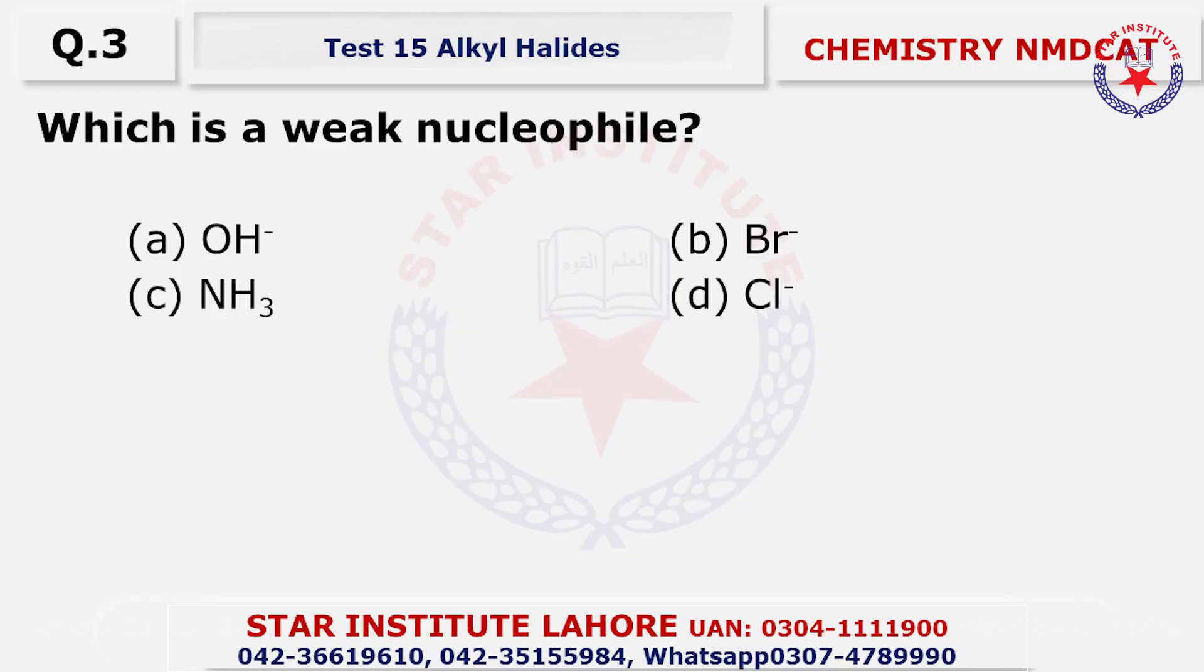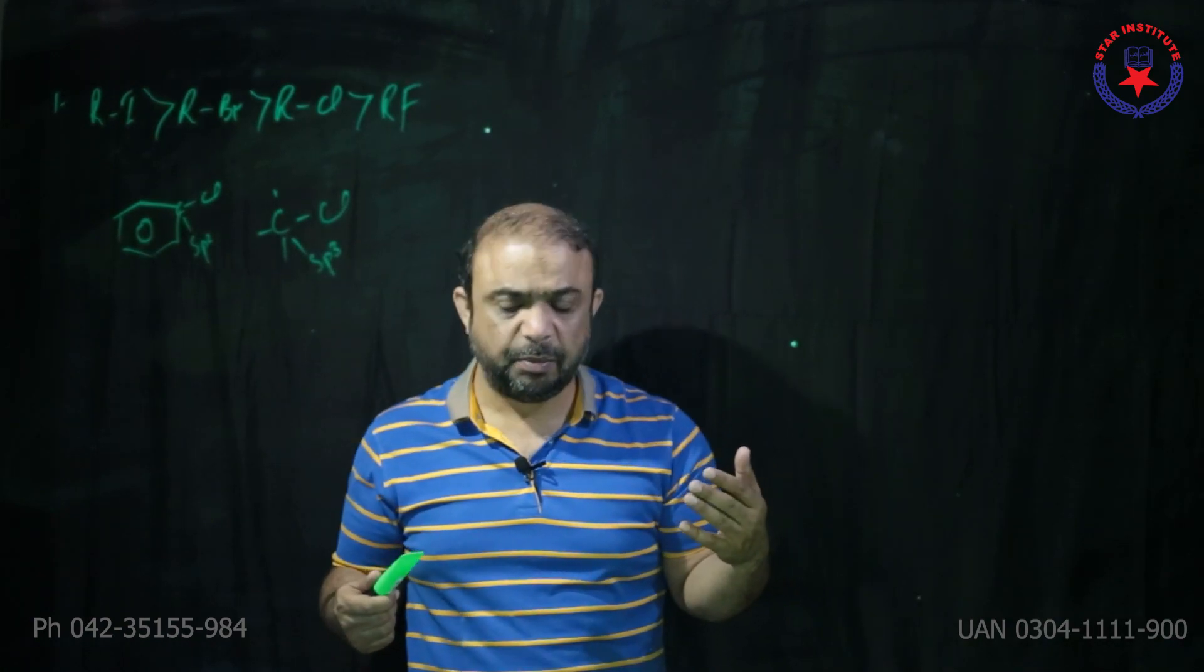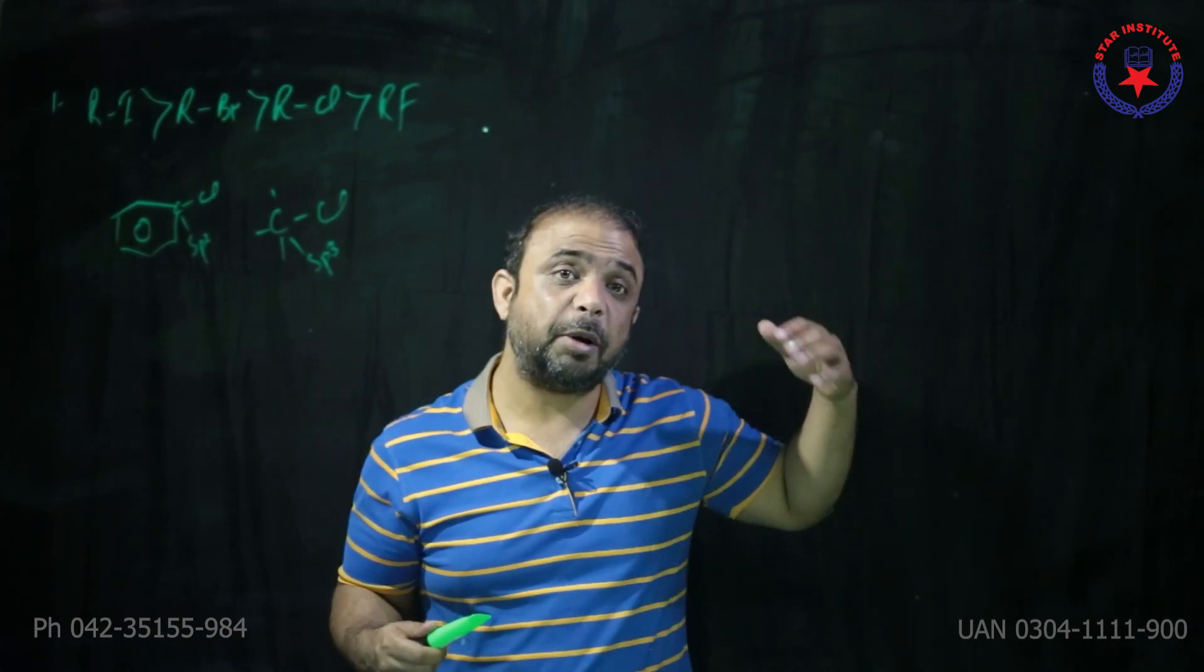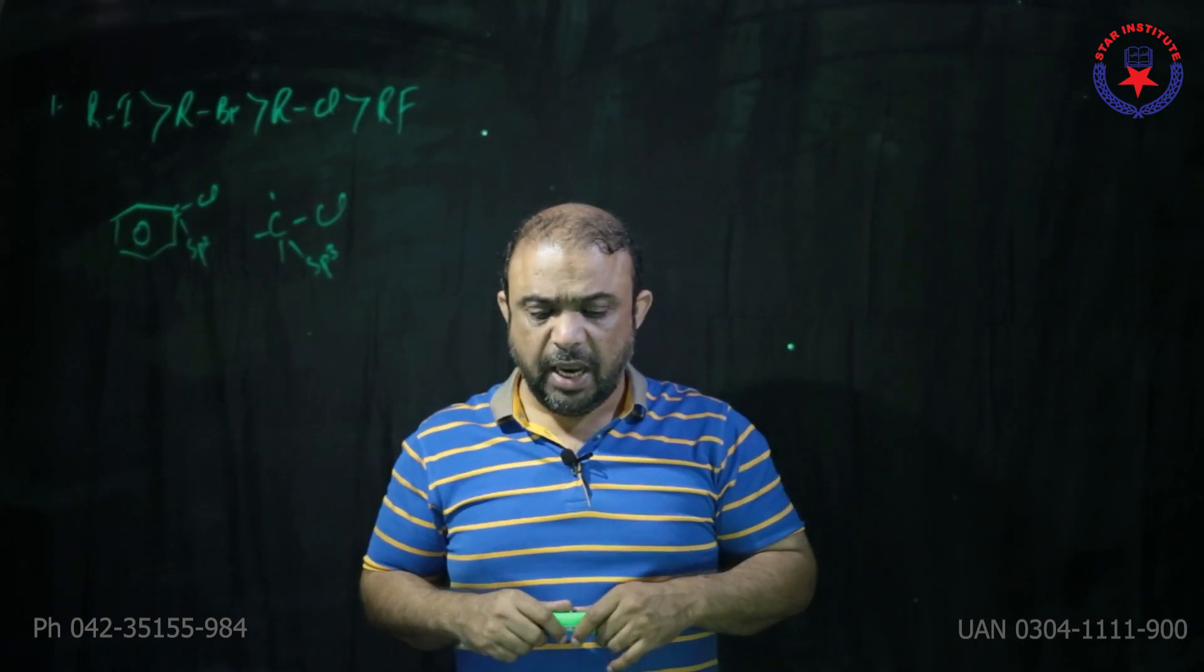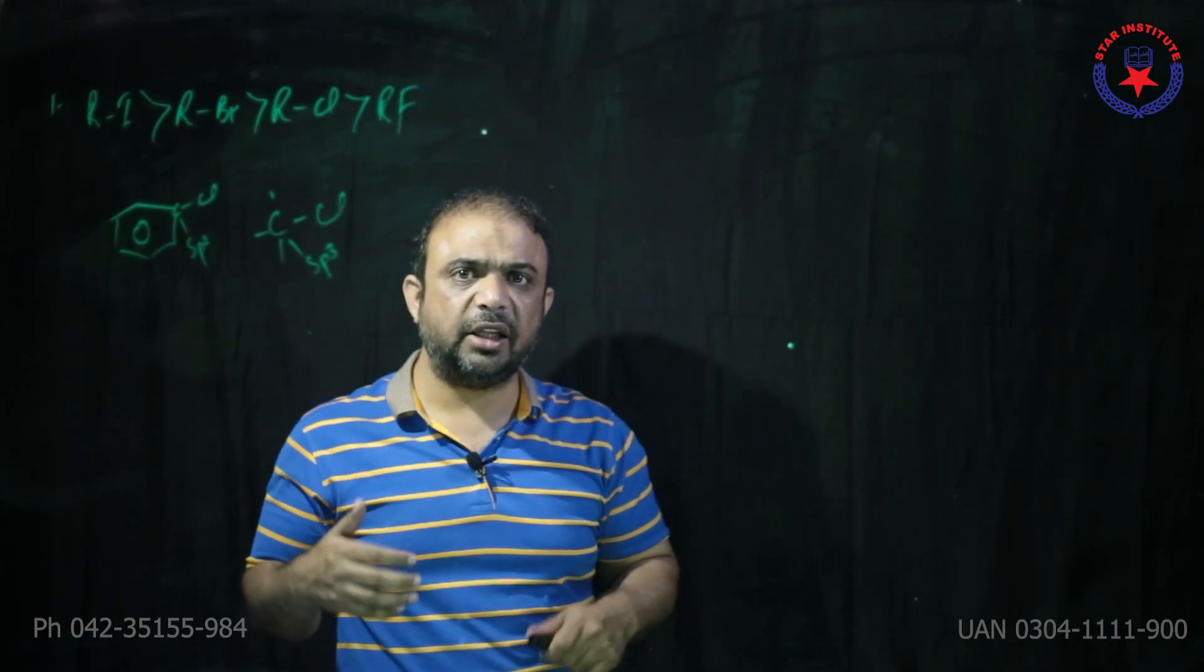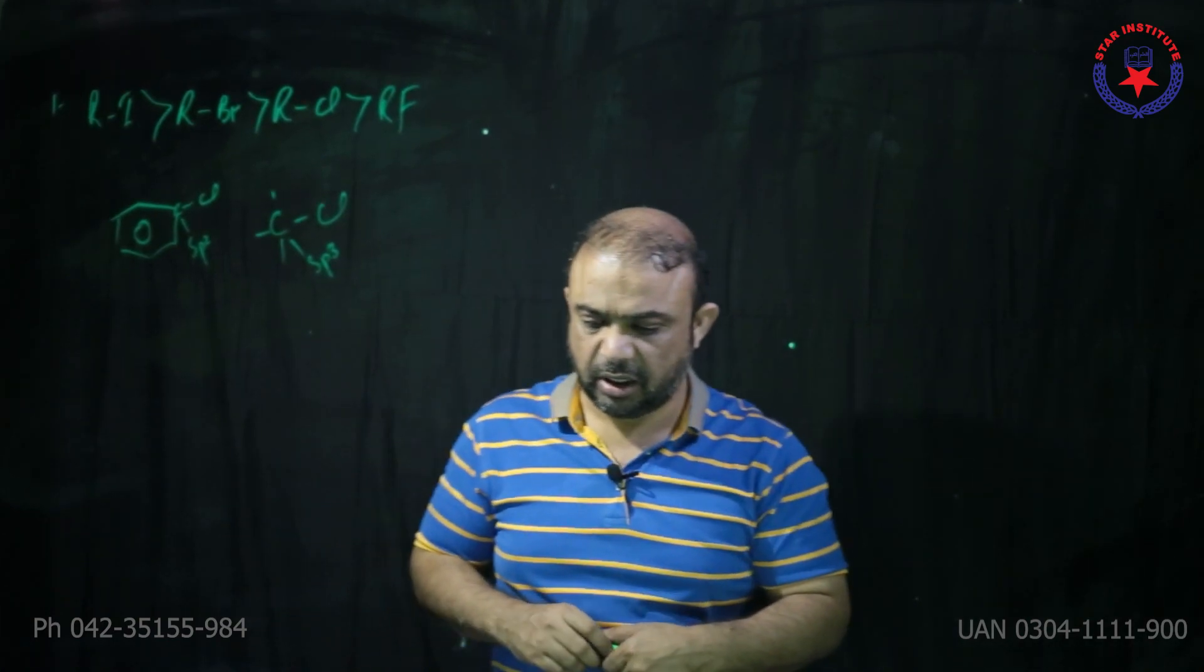Question number three, which is a weak nucleophile? Option A pe dekhiye, OH minus hai, B pe dekhiye, Br minus hai, C pe dekhiye, toh neutral ligand hai, D peh pher anionic ligand hai. So, anionic nucleophiles are stronger in nature, than the neutral ones, kyunke ammonia neutral hai, lehaza this should be weaker. Choice Charlie.